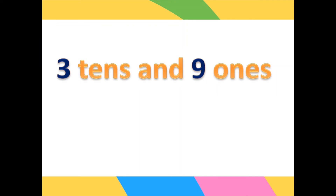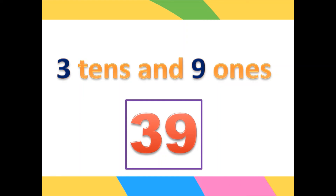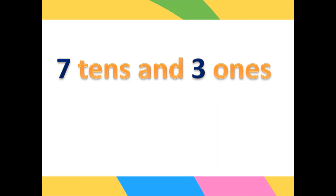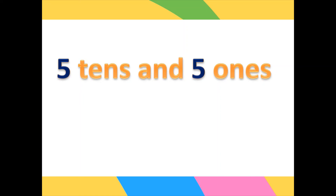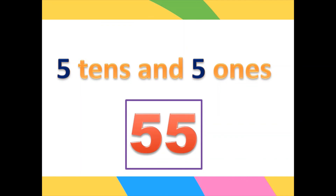Now, if it is written as three tens and nine ones, what is the number? Very good — the number is 39. You just combine the numbers together. Next, seven tens and three ones — the answer is 73. Finally, five tens and five ones — what is the number? Very good, it's 55. Good job, children!